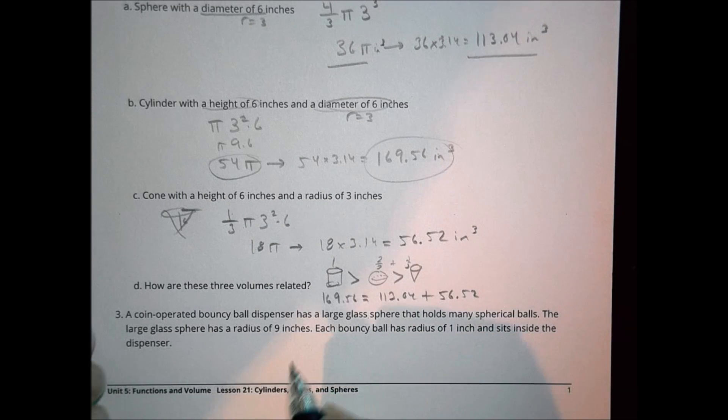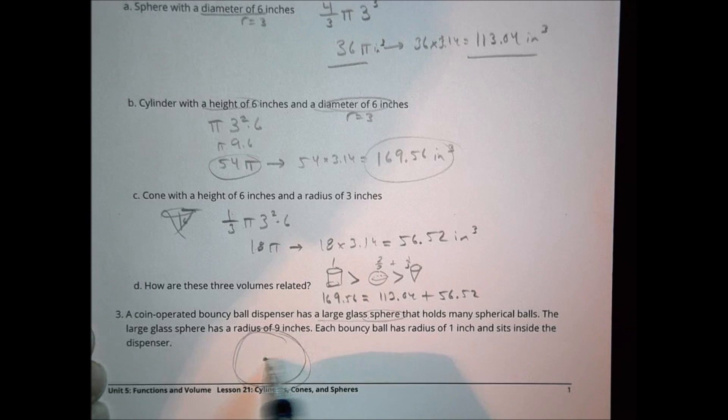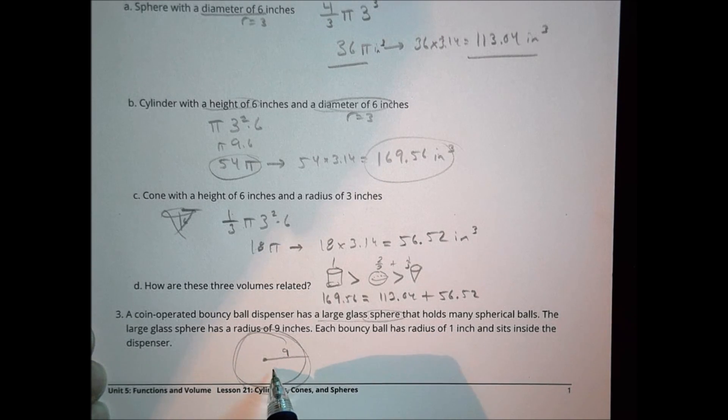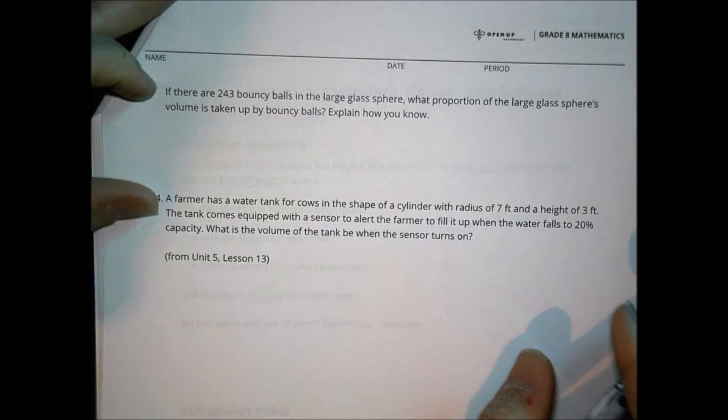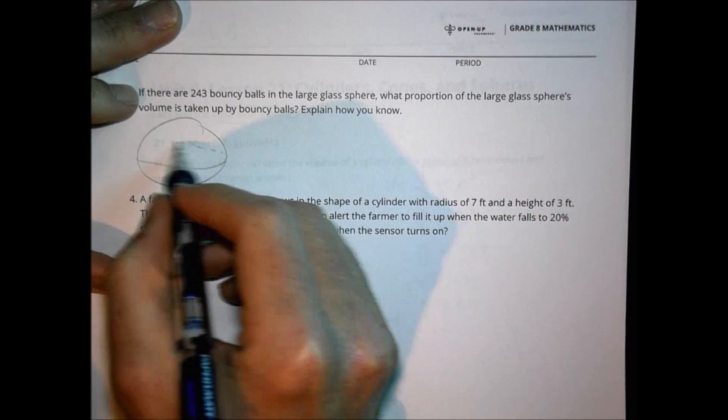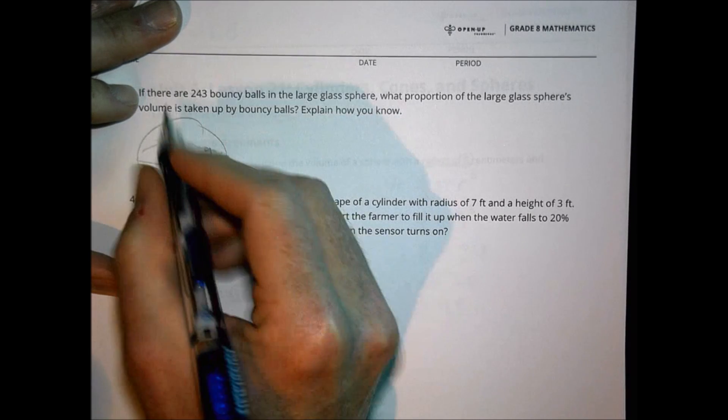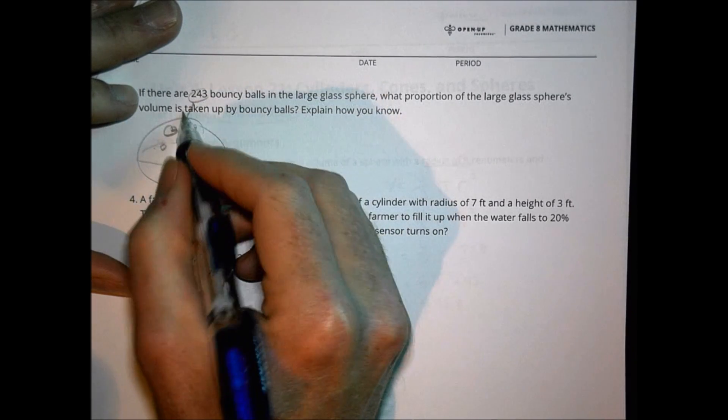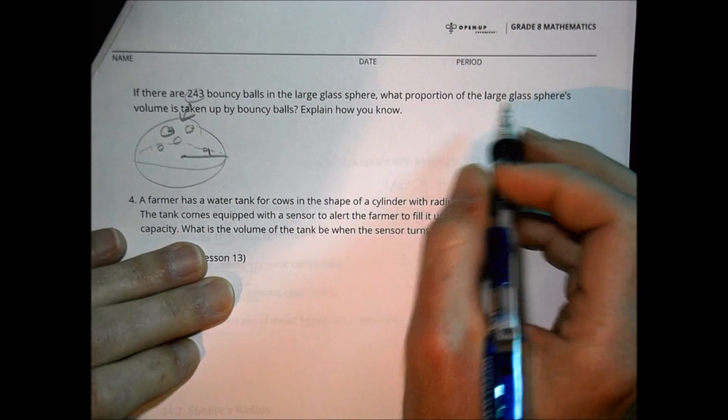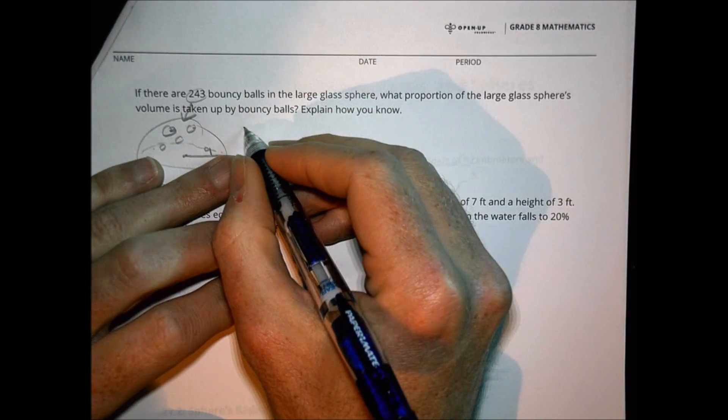Next one, we have a coin operated bouncy ball dispenser. It has a large glass sphere that holds many spherical balls. So you have a giant glass sphere. It holds a bunch of balls in it. The large glass sphere has a radius of nine inches. Each bouncy ball has a radius of one inch. A bunch of bouncy balls. When we turn the page here, we see that our bouncy balls, there are 243 of them. So let's redraw our picture real quick here. We have our sphere. It looks like this. It has a radius of nine. And we have a whole bunch of one inch centimeter or radius bouncy balls in there. 243 are in there.